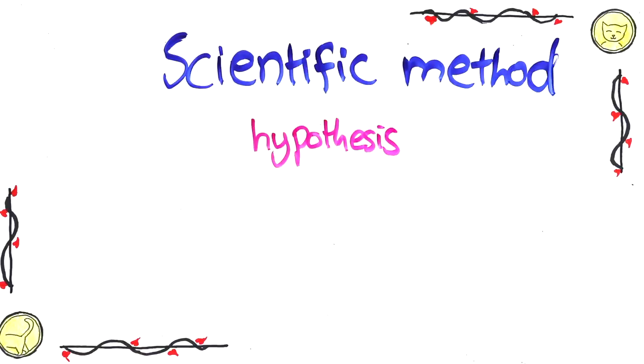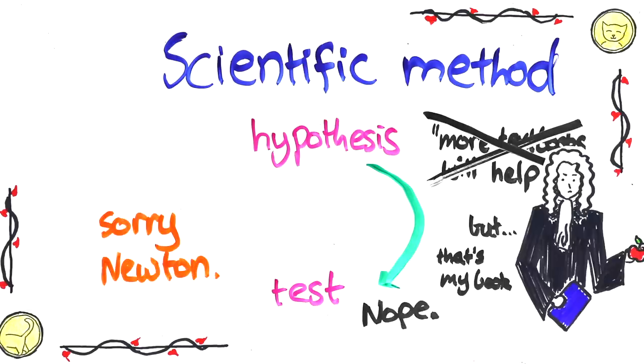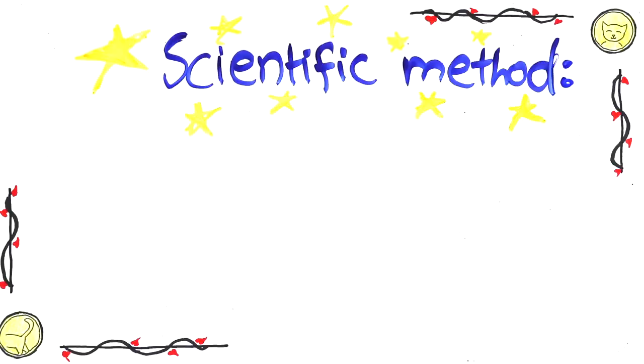The scientific method tells us that we should make hypotheses about how the world works, but then we need to test them. If they don't hold up, no matter how much it seems like they should be true, we need to abandon the theory and start the process again. In this case, you can see how powerful this process can be. Some non-profit interventions really are a lot more effective than others, so it's worth doing this sort of rigorous analysis to find them.